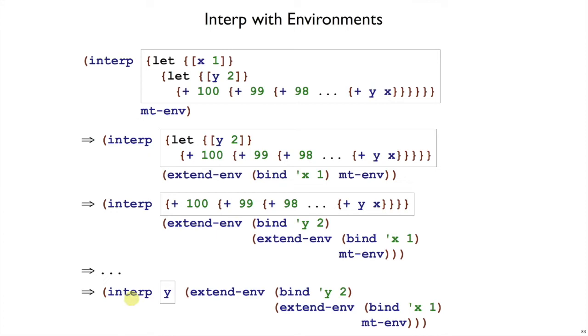Eventually, when we enter y, we will have the current environment, the set of deferred substitutions that say y should be 2, and the lookup function will convert that y to a 2 for us.